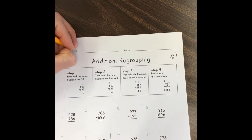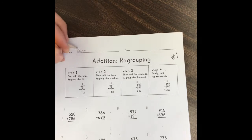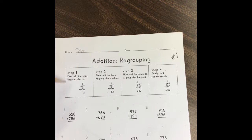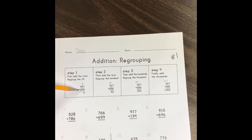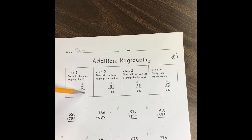Write your names. Addition regrouping. Step one: first, add the ones, regroup the ten. For our example problem, five hundred sixty-seven plus six hundred eighty-six. Seven plus six equals thirteen. We put our three into our ones place, but we regroup our tens place — regroup the ten up here.